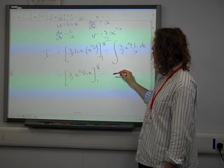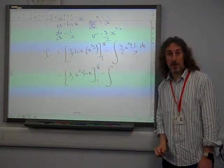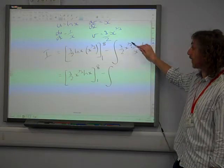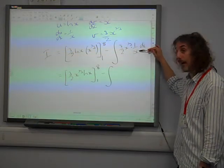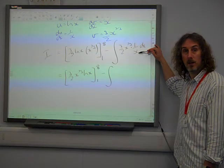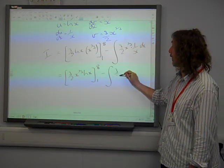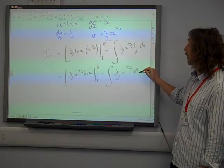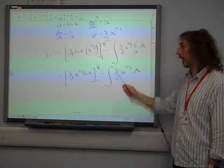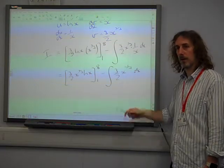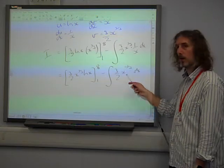Now, this integral, I haven't done it yet, but this integral, notice we've got x to the two thirds divided by x. So that's actually just 3 over 2 x to the minus a third, isn't it? Because that's x to the one, subtract the powers, two thirds take away one, gives us minus a third.